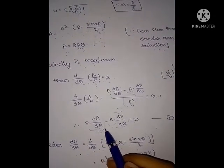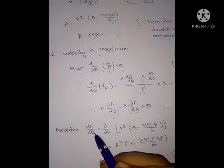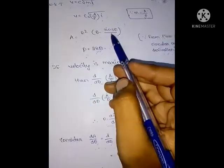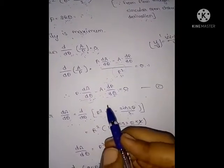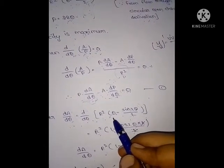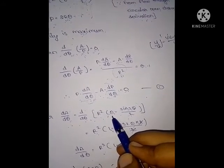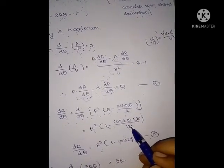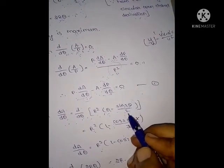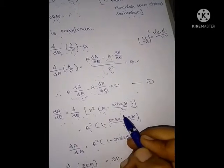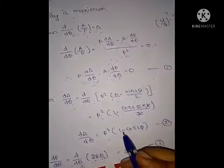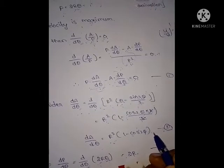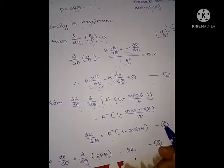Now we need to find dA/dθ and dP/dθ. Differentiating A = R²(θ − sin2θ/2) with respect to θ: the derivative of θ is 1, and the derivative of sin2θ is cos2θ·2, so the 2s cancel. Therefore dA/dθ = R²(1 − cos2θ). This is equation 2.